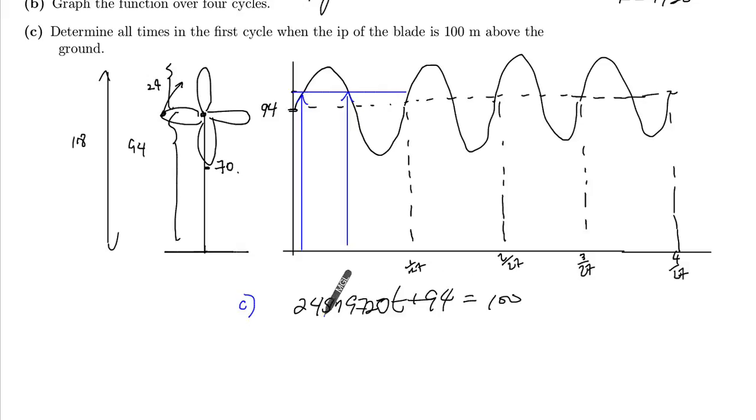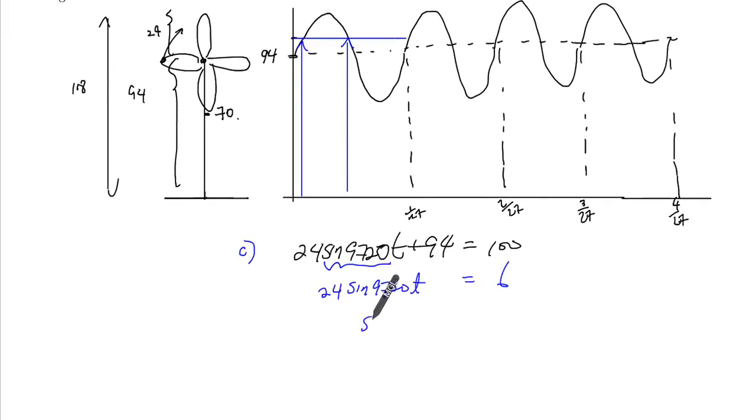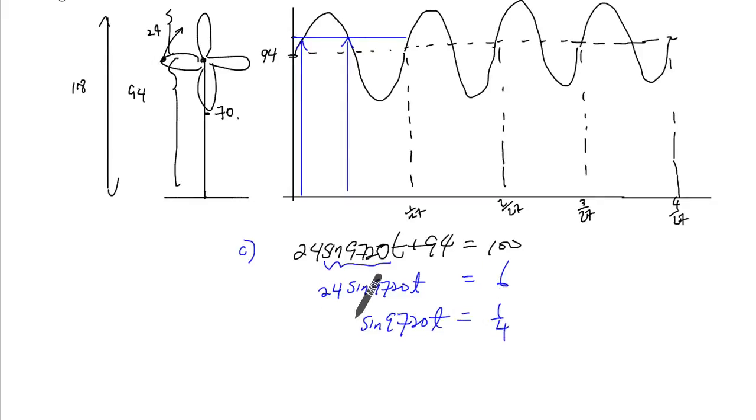And the way we do that is, we first isolate the sine 9720t. So we get 24 sine 9720t equals... Here we get 6, if you subtract 94 from both sides. So you get sine 9720t is equal to 1 over 4, if you divide both sides by 24.